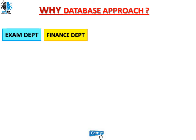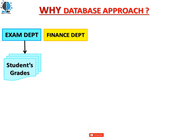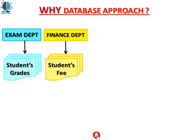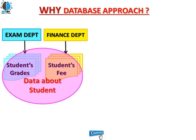Let's take an example. One user from the examination department and another user from the finance department. The examination department may keep files on students and their grades. Programs to print student transcripts and to enter new grades are implemented as part of the application. The finance department may keep track of student fees and their payments. Both users are interested in data about students.